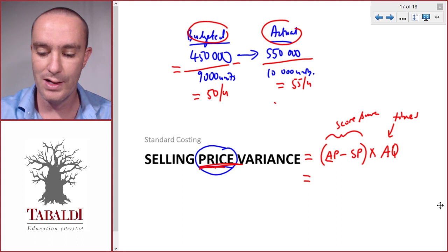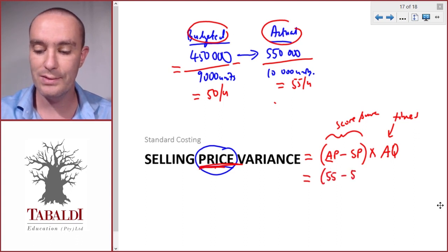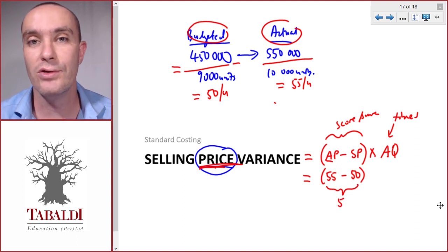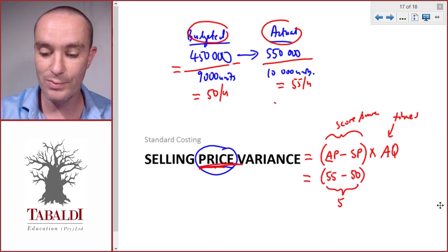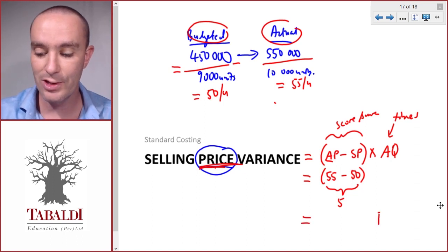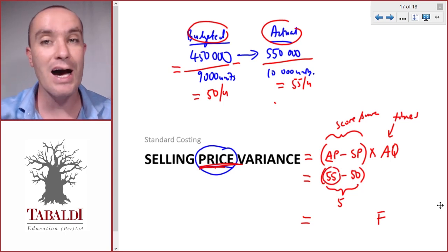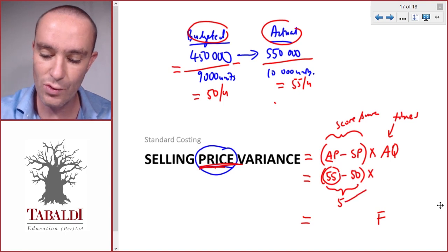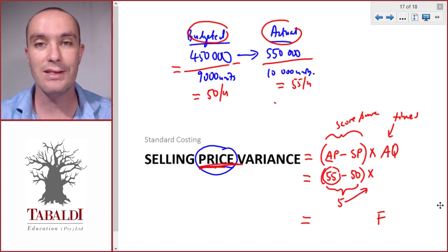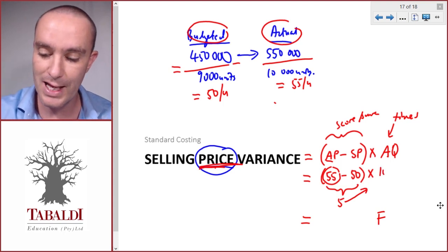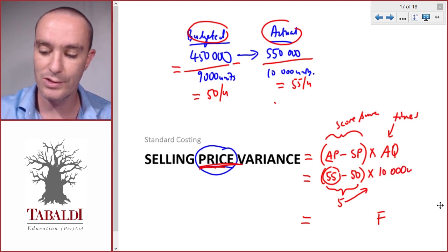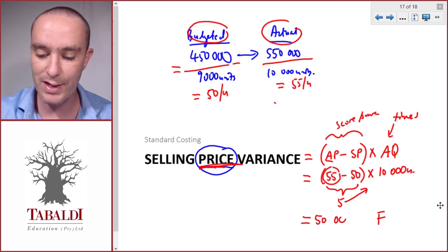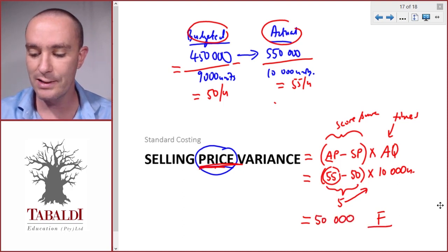Now we can calculate it. Actual price per unit less standard price per unit. We can see here we scored five per unit that would have increased our profit, so we know it's going to be a favorable selling price variance because we sold it at a higher price than what we expected to sell it. How many times did we save or score this five per unit? It's the actual units sold, 10,000. That would give us a selling price variance of 50,000 and it's favorable.